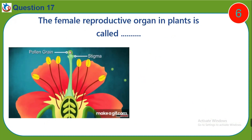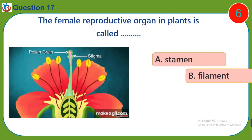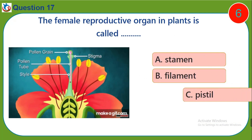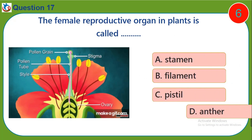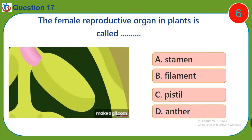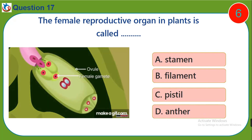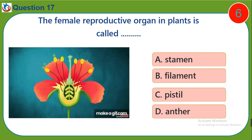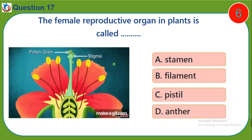Question seventeen: The female reproductive organ in plants is called — a) stamen, b) filament, c) pistil, d) anther.